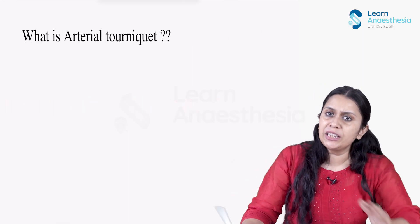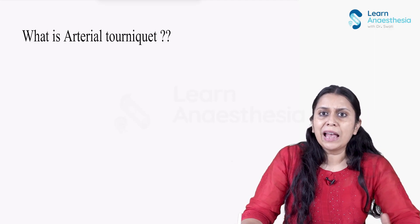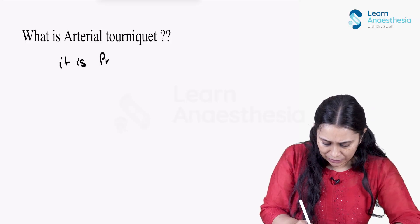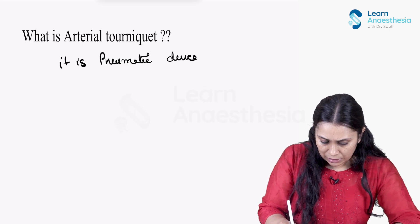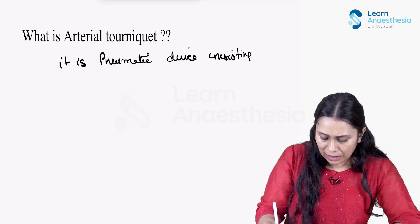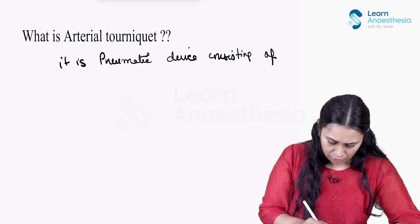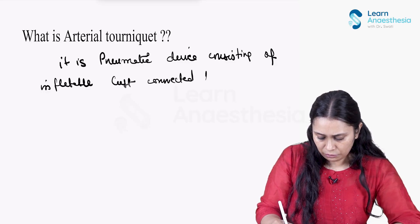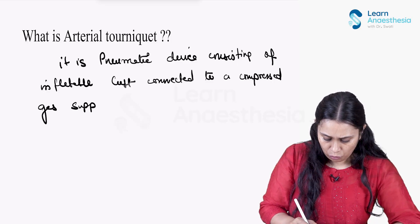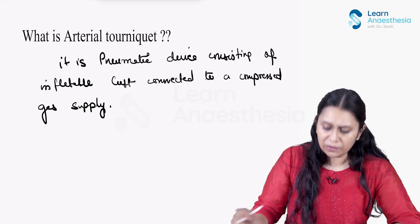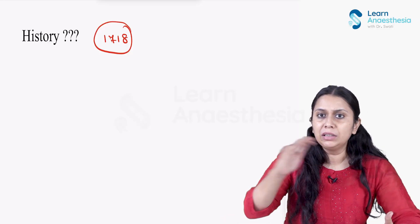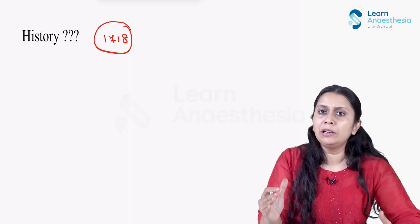What is an arterial tourniquet? An arterial tourniquet is a pneumatic device — an inflatable cuff connected to a compressed gas supply. The concept of the tourniquet was given in 1718 by the French surgeon Jean-Louis Petit. The word 'tourniquet' means 'to turn,' so it is an inflatable cuff which is turned around a limb to produce compression.